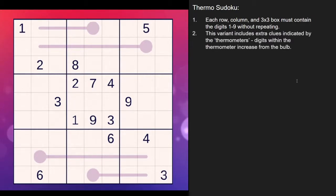In this variant, you have added clues indicated here by these drawn thermometers. And what they are are digits that increase from the bulb to the tip. Now it can be any digits along here. It doesn't have to be sequential.